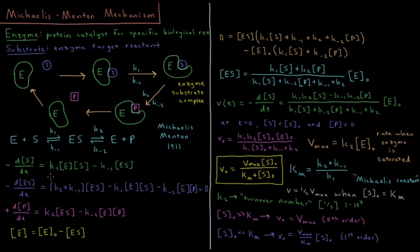Let's describe the rates of change of the various species. For -dS/dt, S is a reactant so it gets consumed. It can be consumed by K1, which depends on the concentrations of E and S, and it can be produced again by K-1 times the concentration of ES. These are all elementary reactions, so the rate law and order is implied by the stoichiometry.